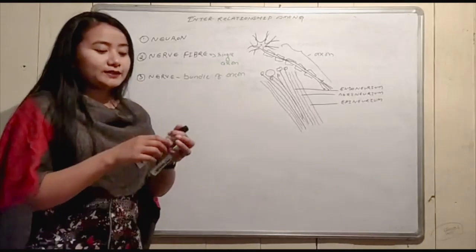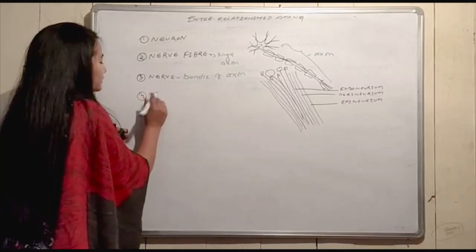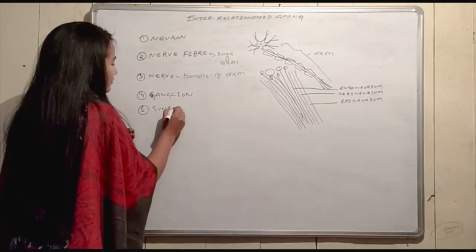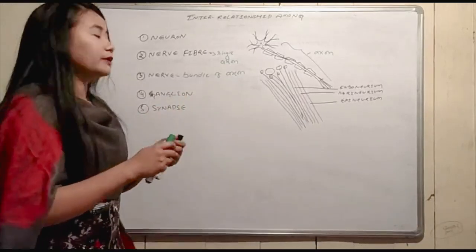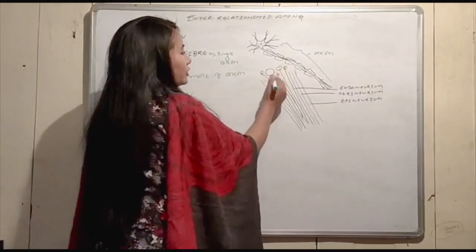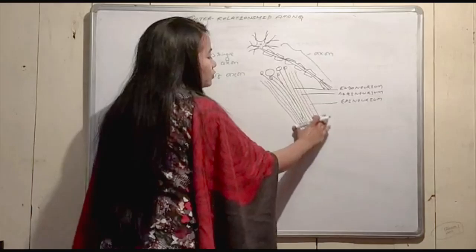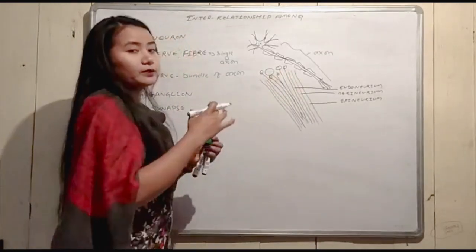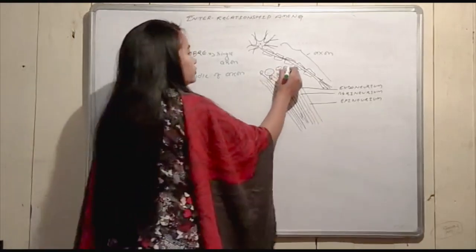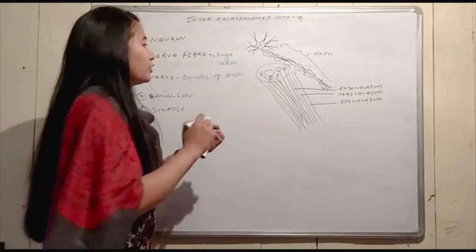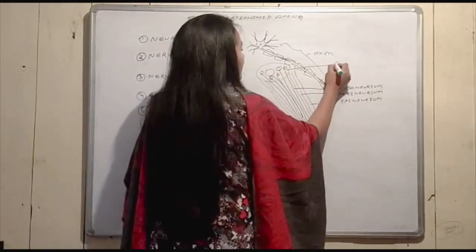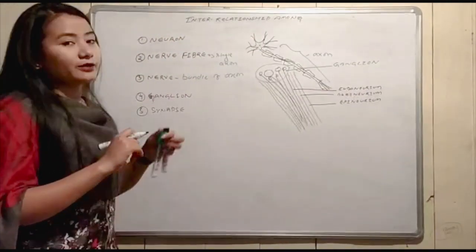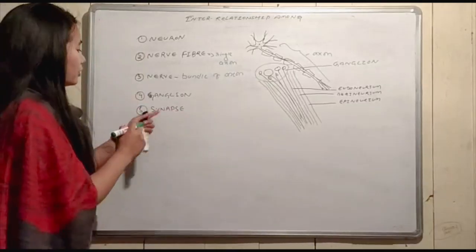Next, the term is ganglion, and then synapse. A ganglion is a cluster of cell bodies. When cell bodies are clustered together outside the central nervous system, that cluster is called a ganglion.